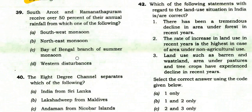South Harcart and Ramanathapuram receive over 50% of their annual rainfall from which of the following? Options: southwest monsoon, northeast monsoon, Bay of Bengal branch of summer monsoon, western disturbances. The right option is northeast monsoon.